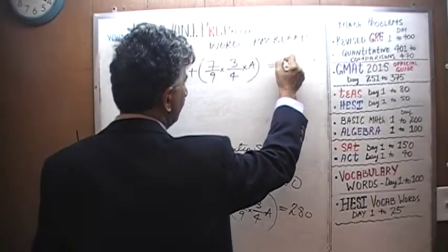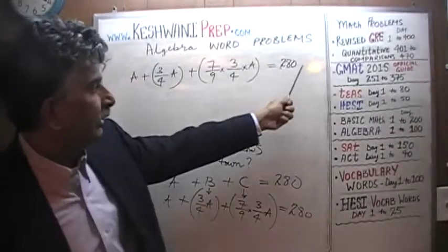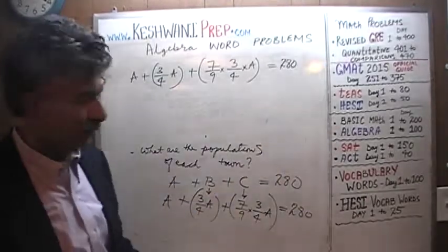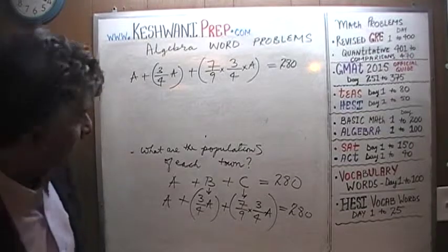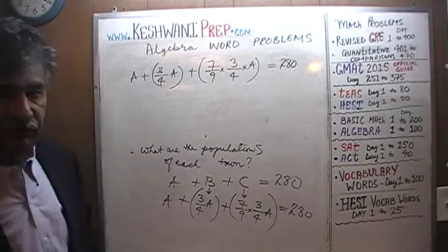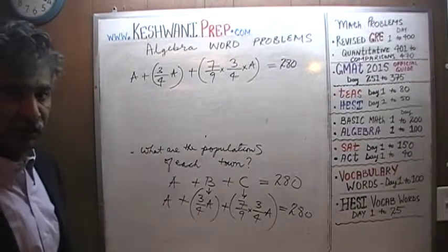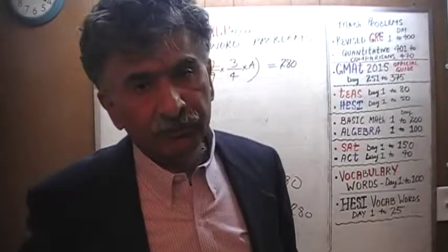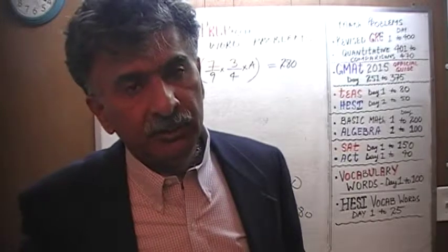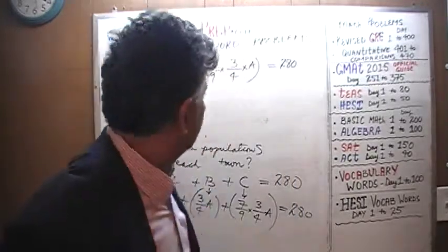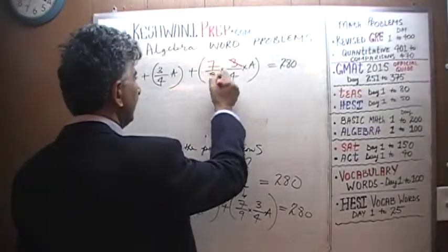We have A plus three quarters of A plus seven ninths of three quarters of A, and that has to equal 280. Let's begin our work. The very first thing we are going to do is see if we can find any common denominator. But before we do that, if there is any simplification we can do — if we can reduce some fractions — we will do that first, because reducing first means less work later. We see a three and a nine here: dividing top and bottom by three, nine becomes three.